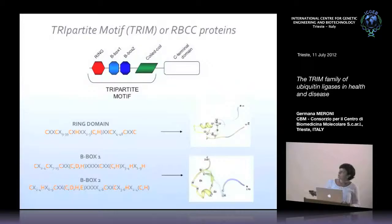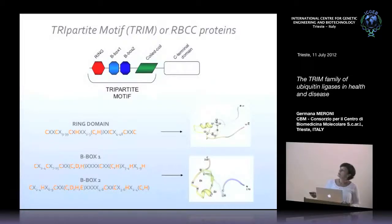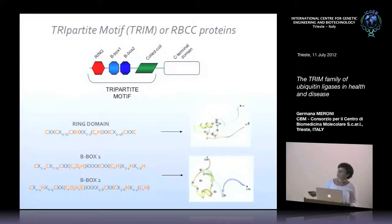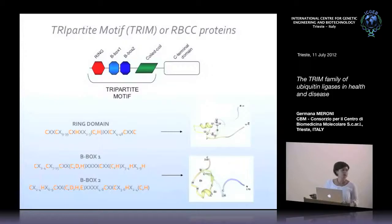The ring domain is characterized by a specific arrangement of cysteine and histidine residues which are able to coordinate two atoms of zinc and to fold in what is called the cross-brace structure of the ring domain. The B-box domain — B-box 1 and B-box 2 — are zinc-binding domains as well. Their cysteine and histidine arrangement is similar, though quite distinct.